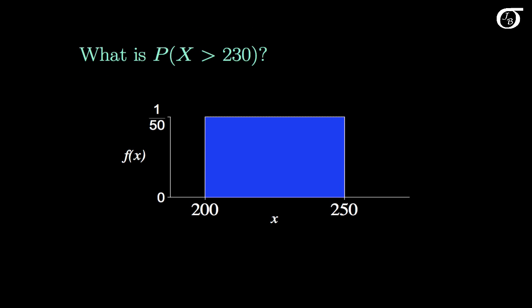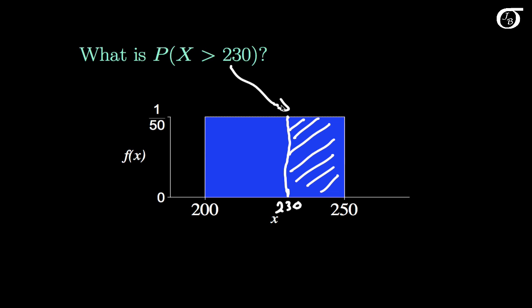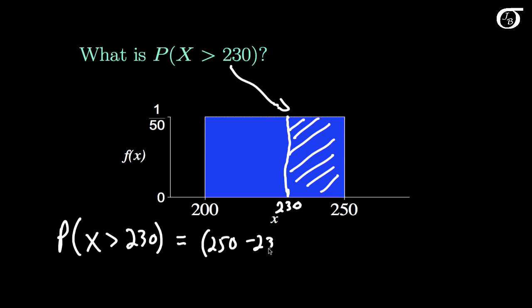What is the probability the random variable x takes on a value greater than 230? For continuous random variables, probabilities are areas under the curve. So we have 230 over here somewhere, and we're simply looking to find the area under the curve to the right of 230. This is simply the base of the rectangle, which is 250 minus 230, times the height, which is 1 over 50. This works out to 20 over 50, or 0.4.